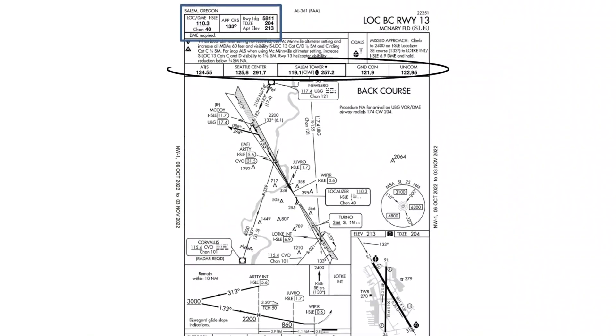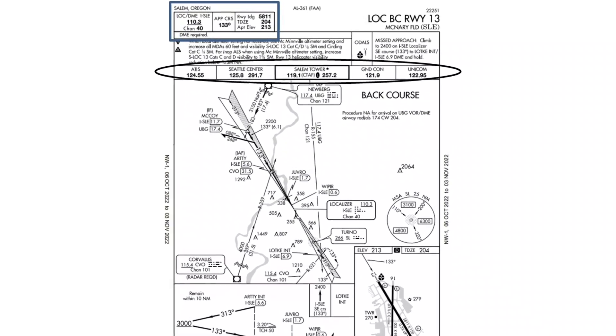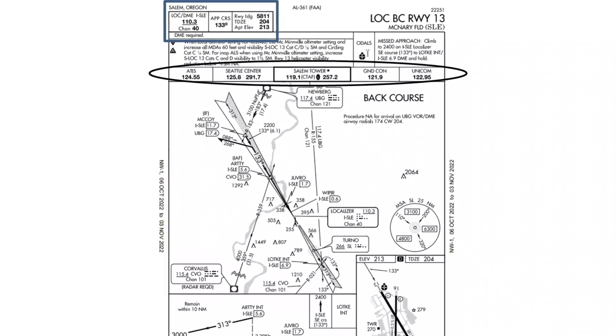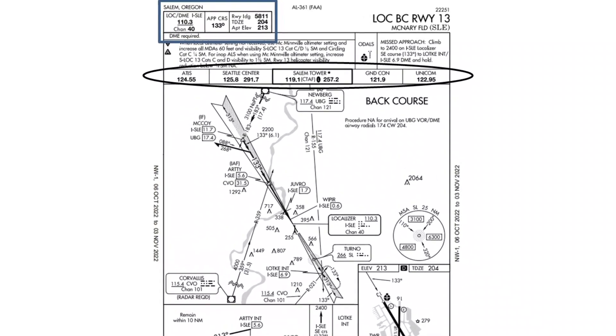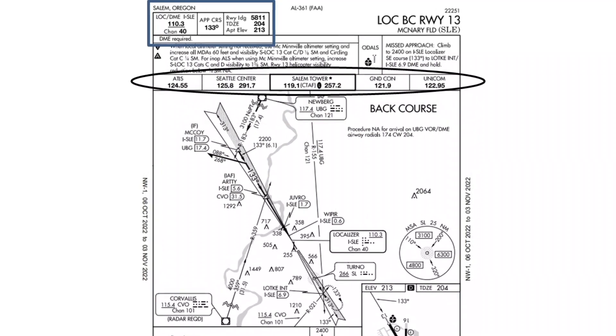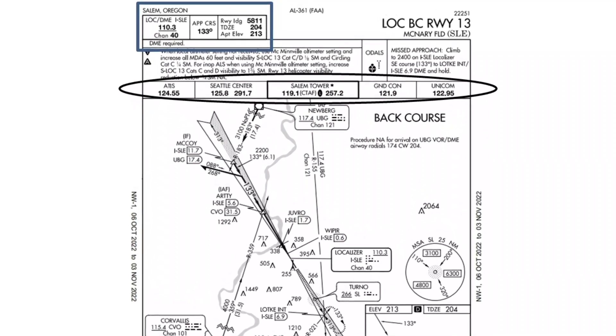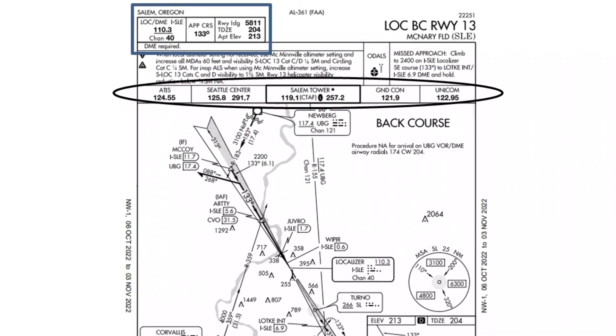The needed frequencies for this localizer back course approach are displayed from left to right and include the ATIS frequency, Seattle Center, Salem Tower, CTAF, Ground Control, and Unicom.